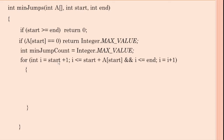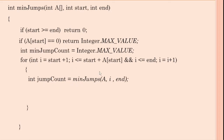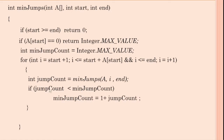The for loop condition is: i less than or equal to start plus a[start] — this is the index — and i is less than or equal to end. When the condition is satisfied, the for loop will be executed. The increment is i equals i plus 1. Inside the loop, integer jump_count equals min_jumps of array comma i comma end — end will be the same. At the end we compare the min_jump_count: if jump_count is less than min_jump_count, then min_jump_count equals 1 plus jump_count. Return min_jump_count.